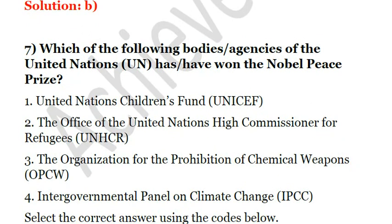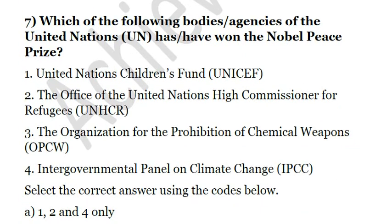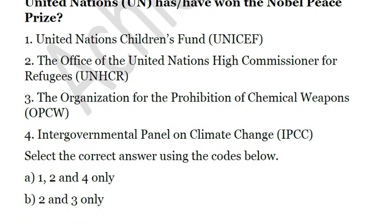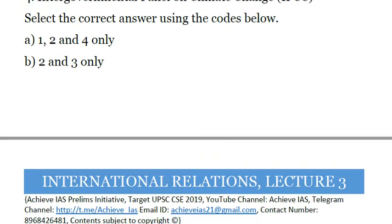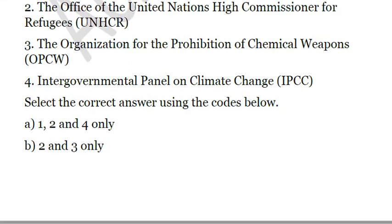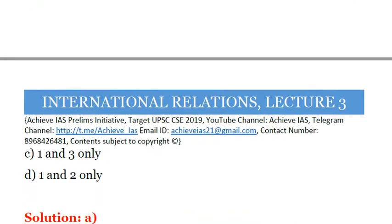The next question is: Which of the following bodies or agencies of the United Nations have won the Nobel Prize? First, United Nations Children's Fund. Second, Office of UN High Commissioner for Refugees. Third, Organization for the Prohibition of Chemical Weapons. Fourth, Intergovernmental Panel on Climate Change. The Organization for the Prohibition of Chemical Weapons is not under the United Nations, so third will certainly not be in the answer. All the rest have won the Nobel Prize. So the answer is A — 1, 2 and 4 only.